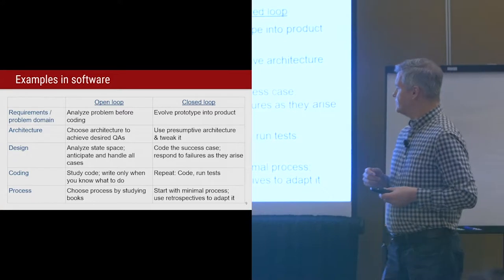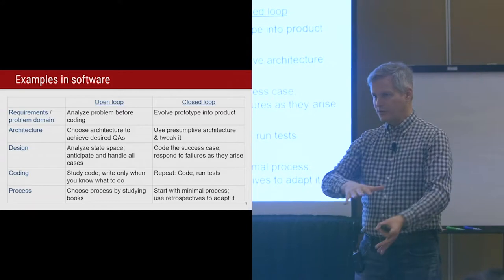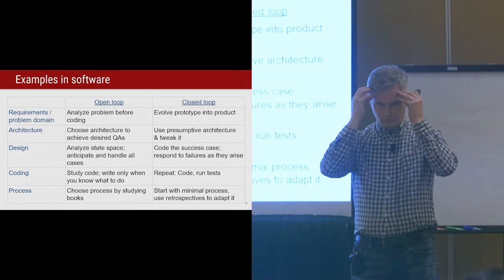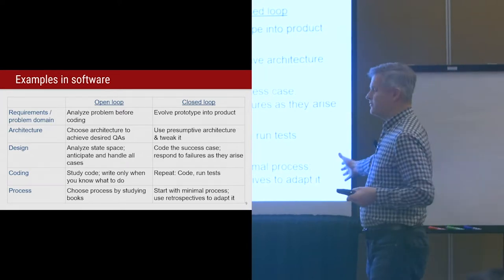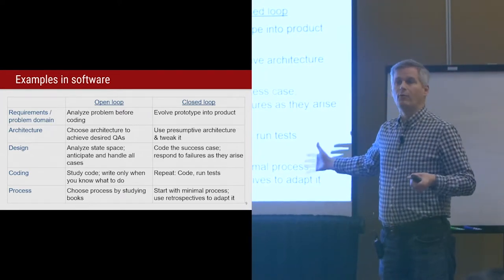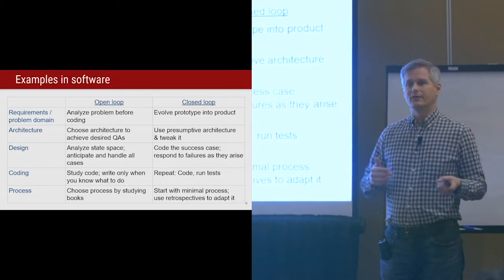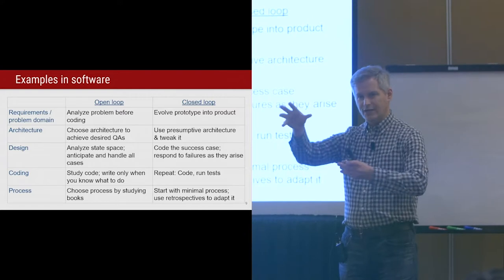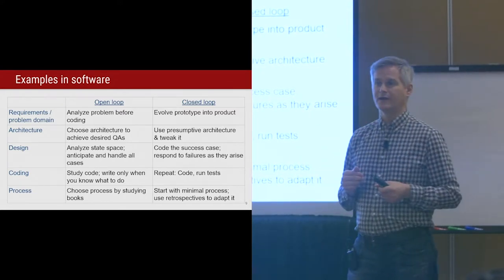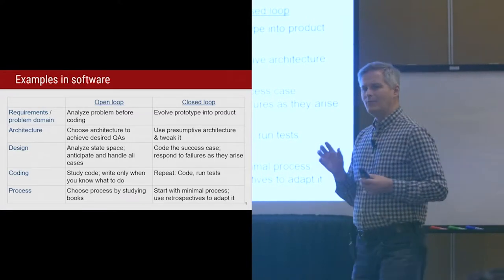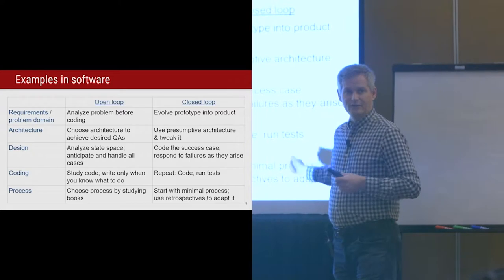The last example: what process should your team follow? The open loop says we read the books on software process, decide this is a good process for us, and execute it. As opposed to: bootstrap yourself with almost no process, use periodic feedback asking what isn't really working, then change the process around this and grow it to support the activities you need to do. I hope I've done what I set out to do, which is not demonize either of these two approaches, but merely point out the differences.